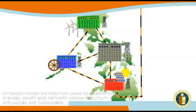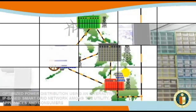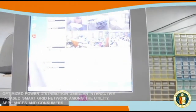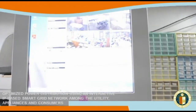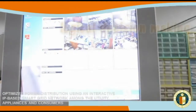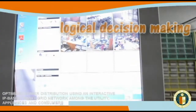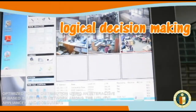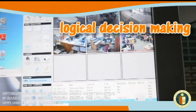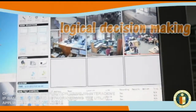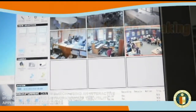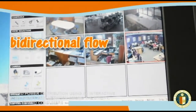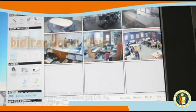Other than the distribution and communication layer, another one shall be incorporated — the control layer — in charge of logical decision-making reactive to data gathered via the utility management system. This way, energy flows bi-directionally to and from the consumers and the utility.